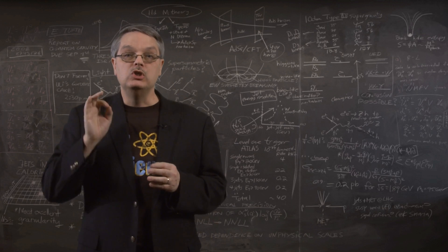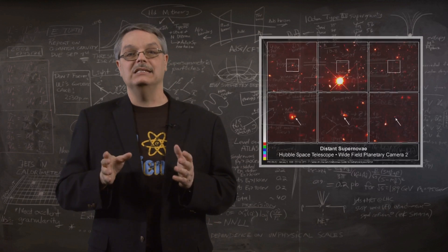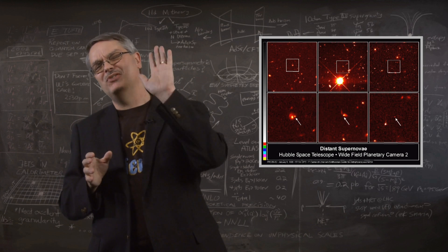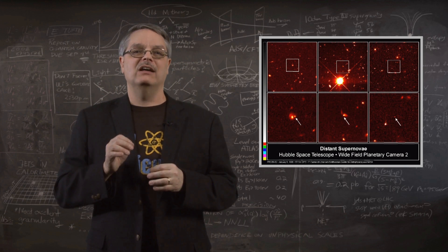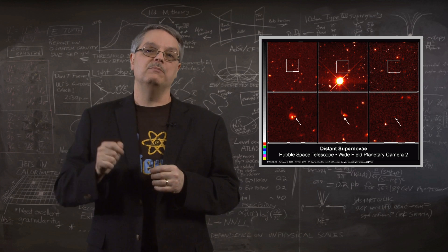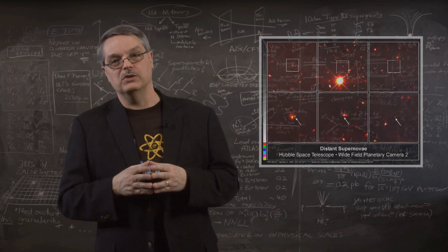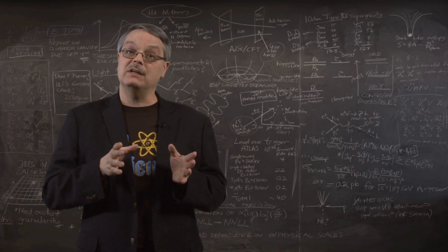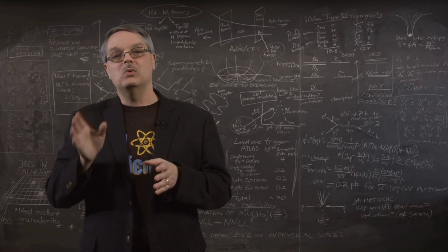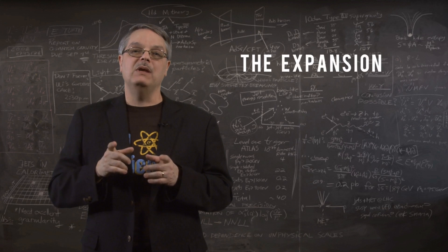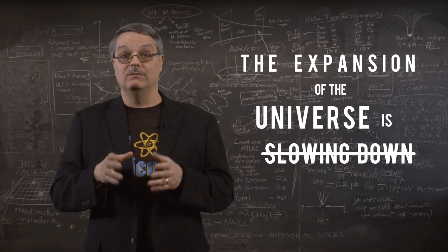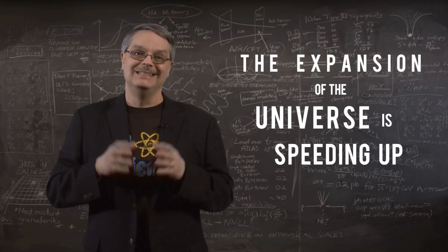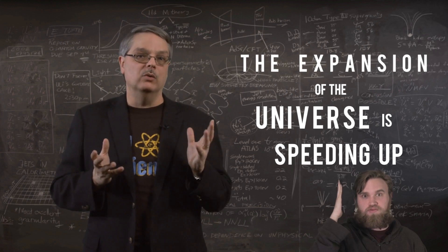So, in 1998, two experiments applied these techniques and looked at the most distant supernovae ever. And they found that supernovae were dimmer than predicted by the expansion of the universe. This means that the stars were farther away than expected. But that meant something even more shocking. It meant that the expansion of the universe wasn't slowing down. It was speeding up. That was really a mind-blowing observation.